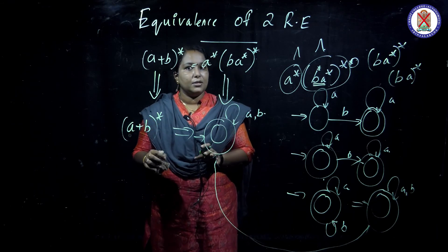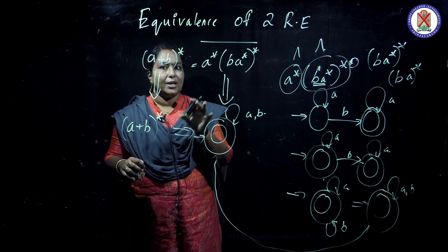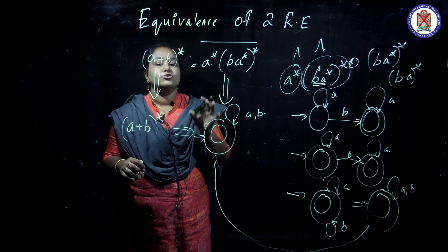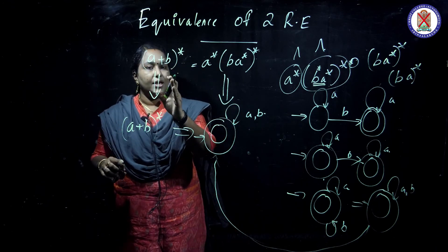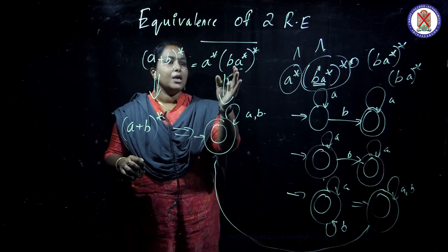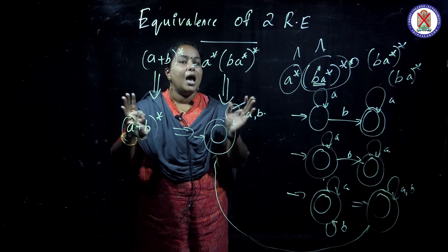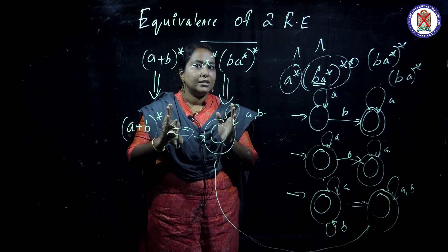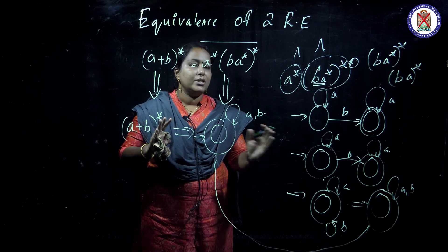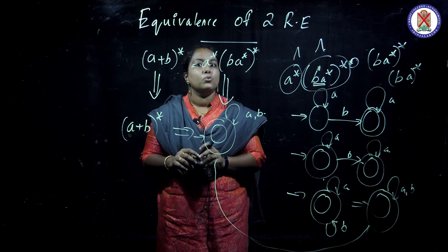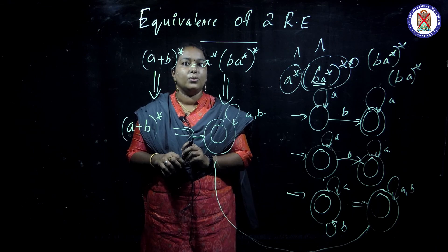Once again, I will explain the procedure. When given two regular expressions to prove equivalence, you must draw the DFA for the first regular expression and the DFA for the second regular expression and minimize both maximally. Then look whether these two DFAs are equal. If they are equal, those two regular expressions are being equal.